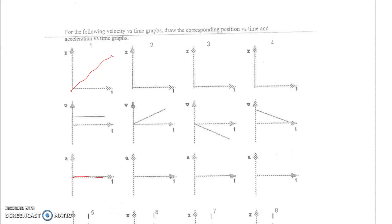Now we have a slope to our velocity versus time graph — velocity is increasing at a constant rate. So our position versus time graph is going to have some parabolic shape. Assuming we start at zero, we have a constant positive velocity meaning position is increasing over time, and the amount it increases gets bigger and bigger — if it was 5 meters per second, then it becomes 10 meters per second. So we get this part of a parabola. For acceleration, we have a constant positive slope, meaning acceleration is positive and constant.